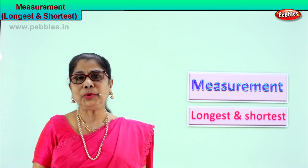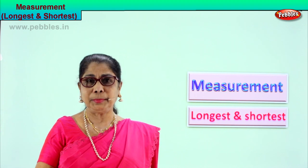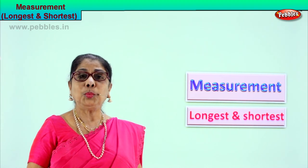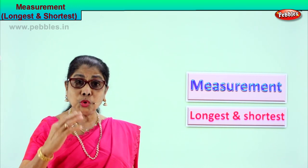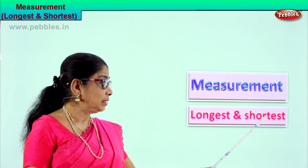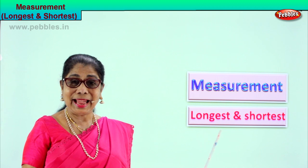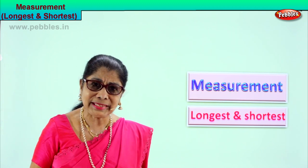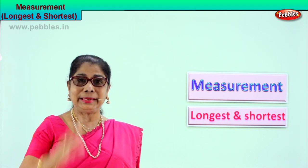Hi children, today let us learn two measurements: longest and shortest. We will compare three items and you observe — you look and say which is the shortest and which is the longest. That's what we are going to learn, two measurements. What are the two measurements? Longest, shortest. Observe, look and say.